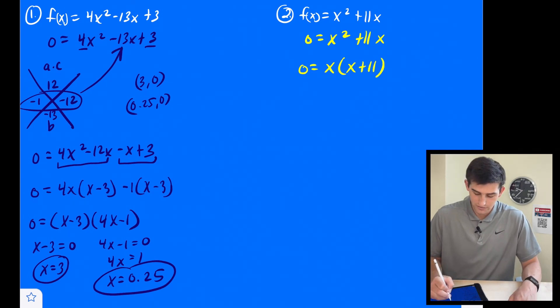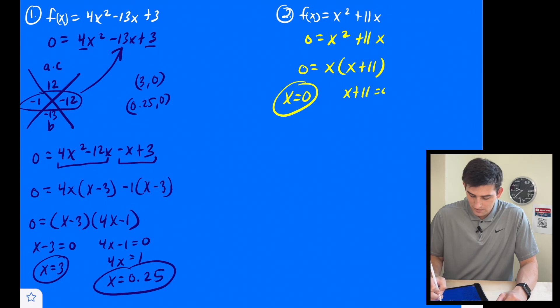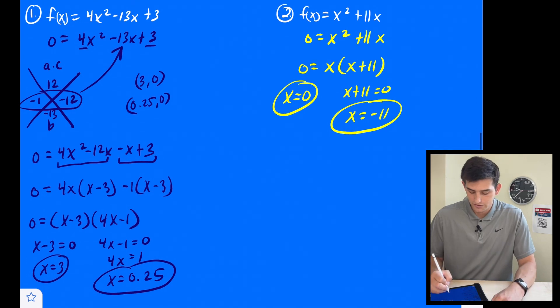And now we can set each of those equal to zero. So the first one we get x is equal to zero, which means zero is a zero of the function that crosses at the origin. And we have x + 11 = 0. So we can subtract 11 to get x equals negative 11.